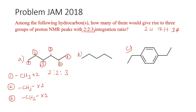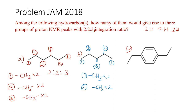For compound B, there are 3 signals as well. Signal 1 is due to the methyl group, which appears twice. Signal 2 is due to the methylene group, also twice. Signal 3 is due to another methylene group appearing once. This gives a ratio of 2:2:2 — not 2:2:3 — so B is not the answer.